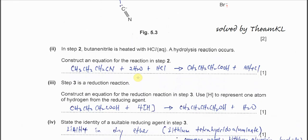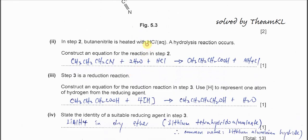Part (ii). In step 2, butanenitrile is heated with HCl, a hydrolysis reaction occurs. Construct an equation for the reaction in step 2. First, for hydrolysis, it must involve H2O. The CN triple bond breaks, this carbon will form COOH, which will be butanoic acid. And this nitrogen will form ammonia. So eventually, it will react with the HCl to form ammonium chloride. For this hydrolysis, you need to remember it's not just water, it must be together with the HCl because it will form the salt later.